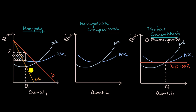From a market efficiency standpoint, if you were to be allocatively efficient, you'd be producing at a quantity where marginal cost intersects demand — but that is not happening here. So you have all of this deadweight loss.